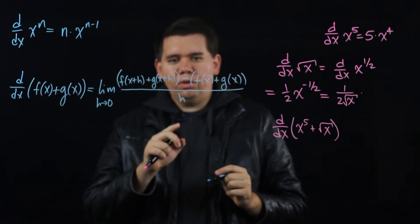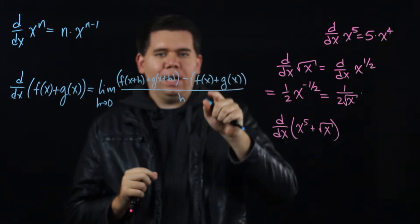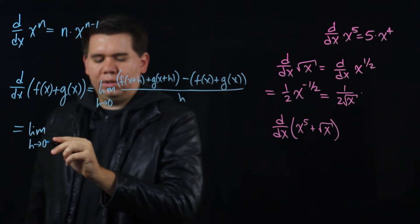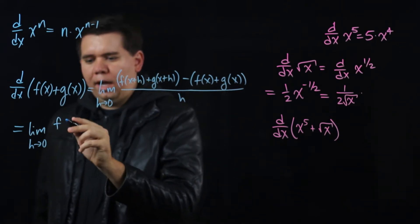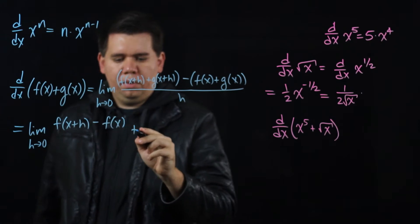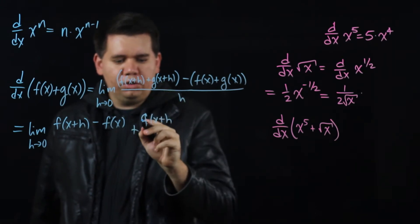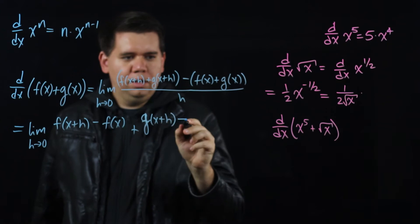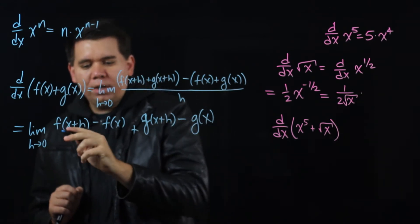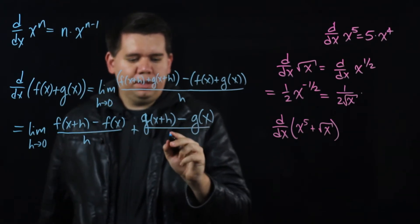Notice, since you are subtracting the whole piece f(x) plus g(x), that's the same as subtracting f(x) and then subtracting g(x). We can rearrange the terms to get the limit as h goes to 0 of, on top: f(x+h) minus f(x), plus g(x+h) minus g(x). We just took these four terms and rearranged them. Then we divide the whole thing by h, which is the same as dividing the first piece by h and the second piece by h.